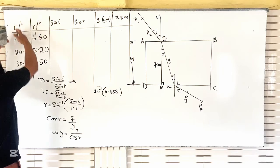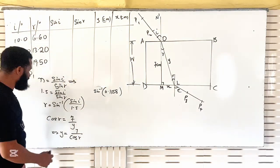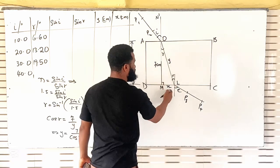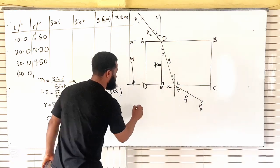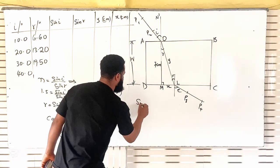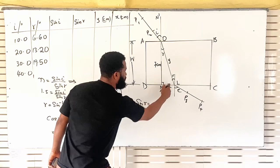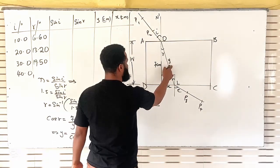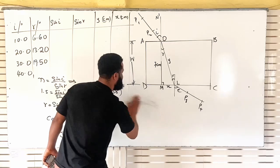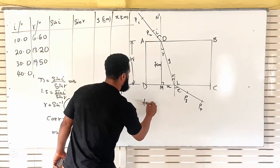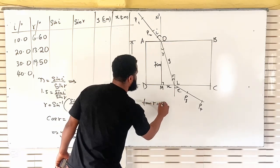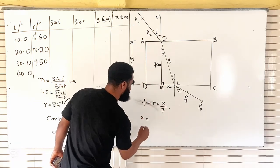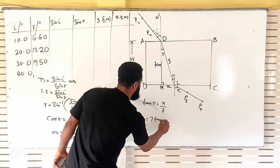So I have gotten R and I can now find my Y. If I want to find X, I can say sine R equals opposite over hypotenuse, or I can use tan. Let me prefer tan. Tan R is equal to opposite over adjacent. Therefore, X is going to be 7 tan R.